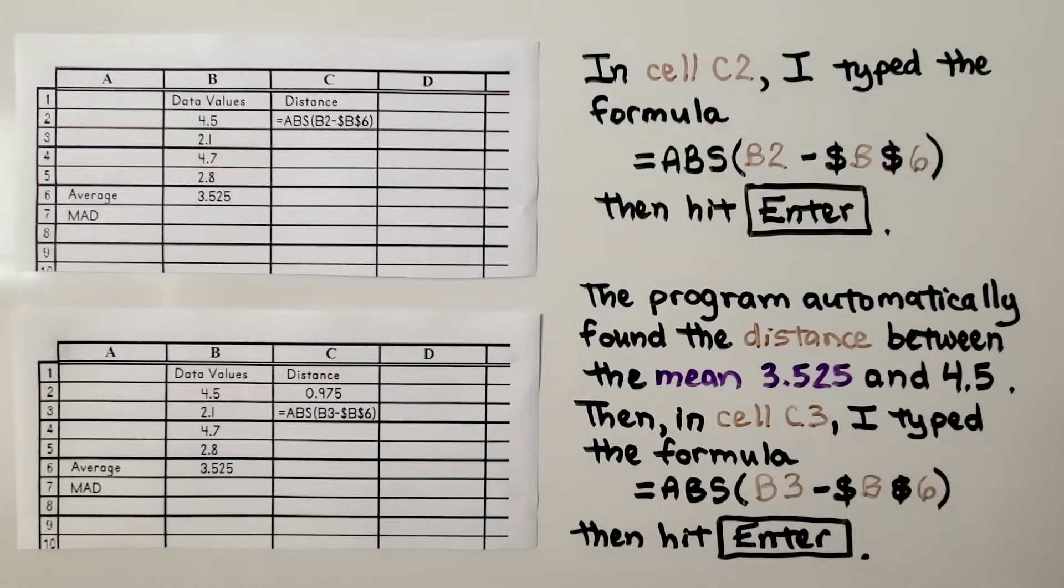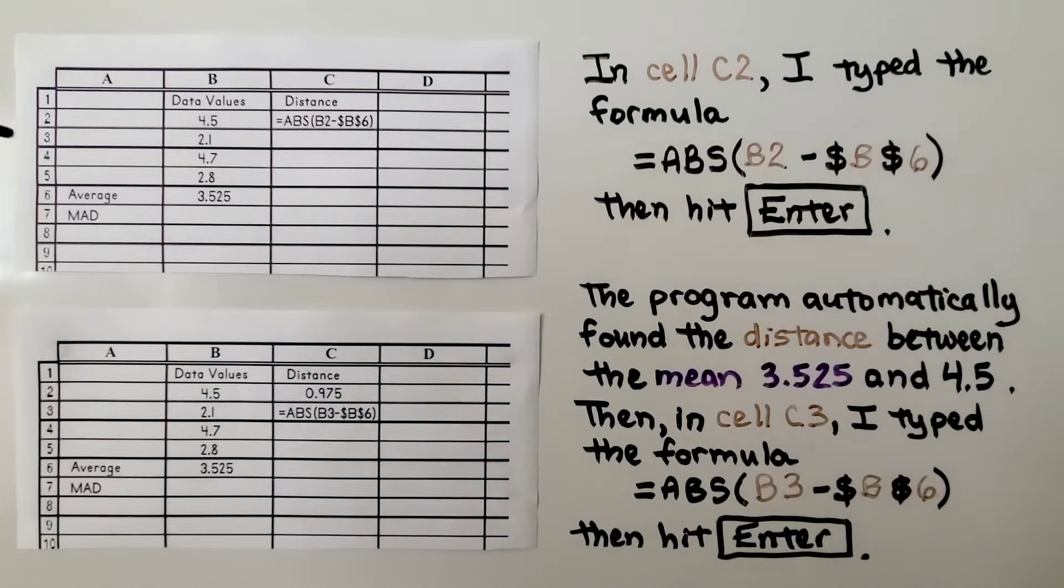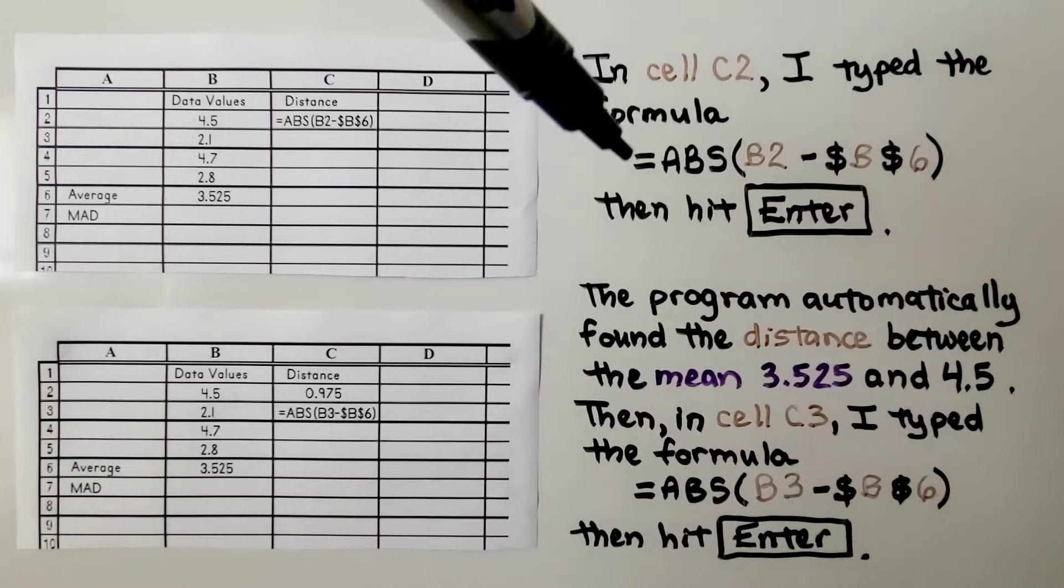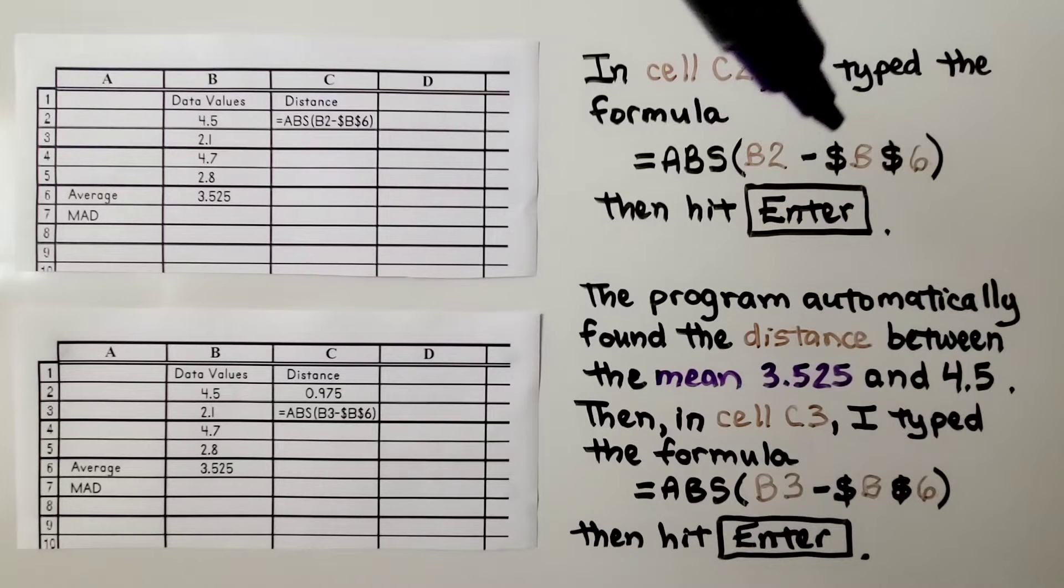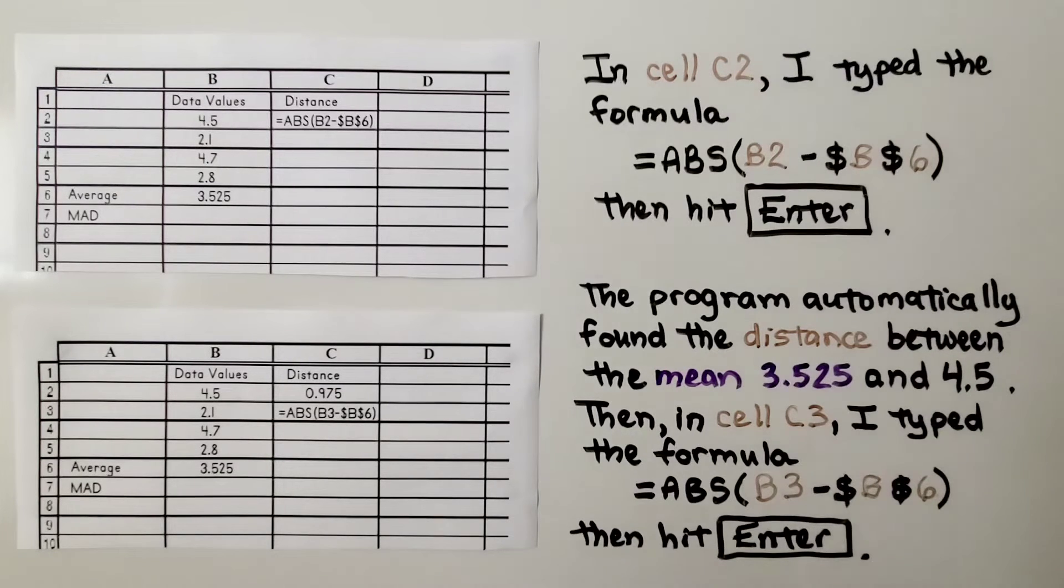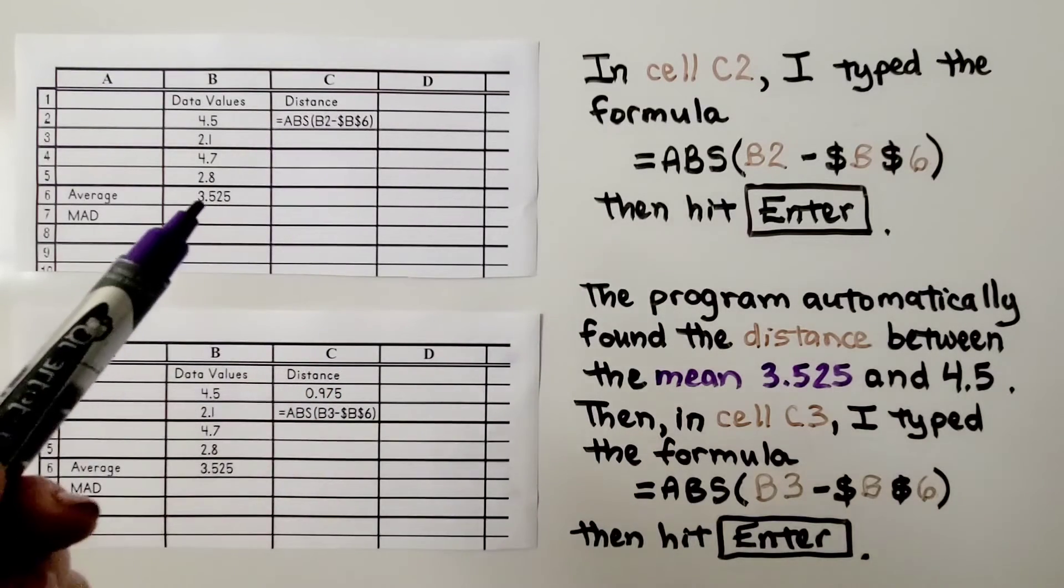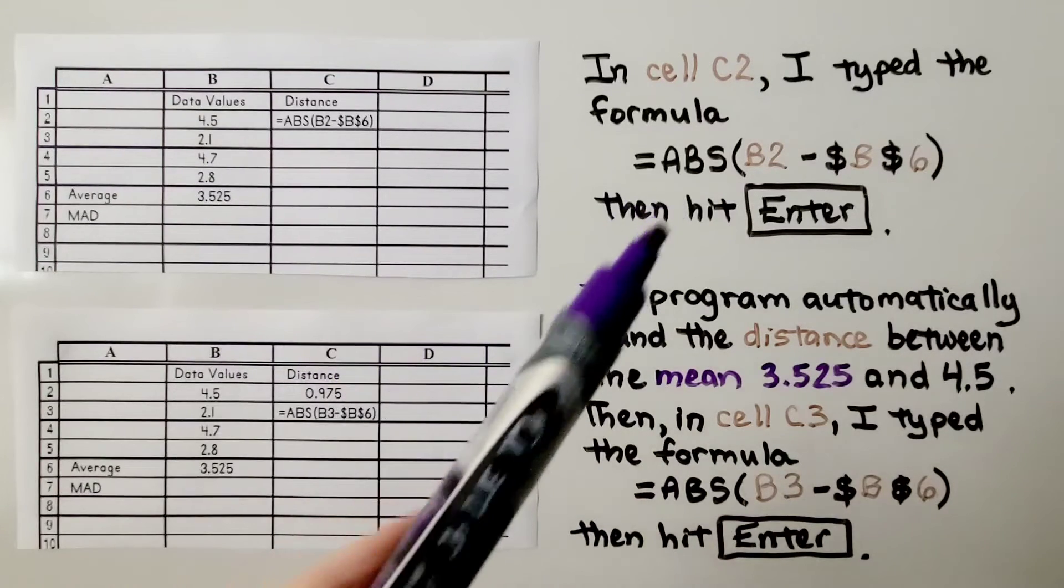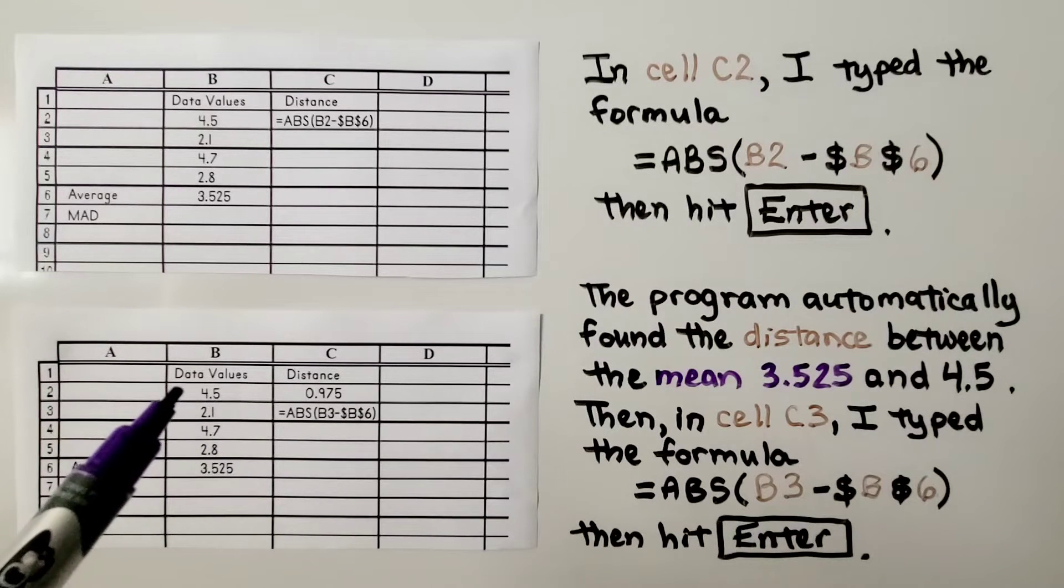Now I moved up to cell C2 under the word distance. So in this cell, I typed the formula: equal sign, ABS, parentheses, B2 minus dollar sign B dollar sign 6. And then I hit enter. This formula is going to find the distance between our average and this value, 4.5. When I hit enter, it automatically found the distance between the mean and this value in B2.